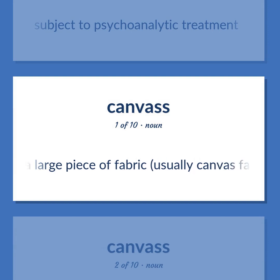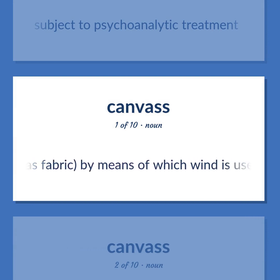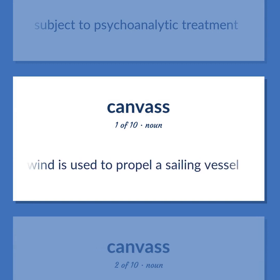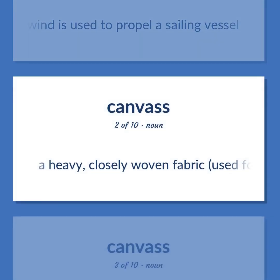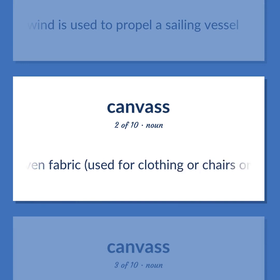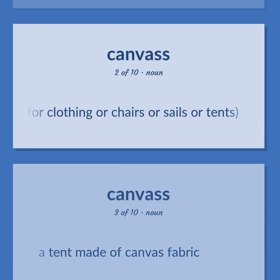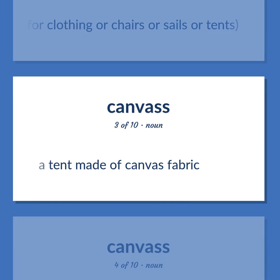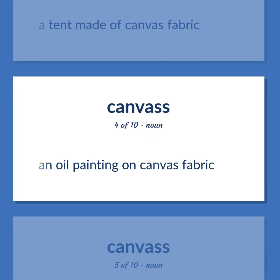Canvas. A large piece of fabric, usually canvas fabric, by means of which wind is used to propel a sailing vessel. A heavy, closely woven fabric, used for clothing or chairs or sails or tents. A tent made of canvas fabric. An oil painting on canvas fabric.